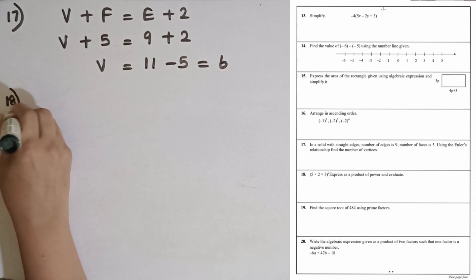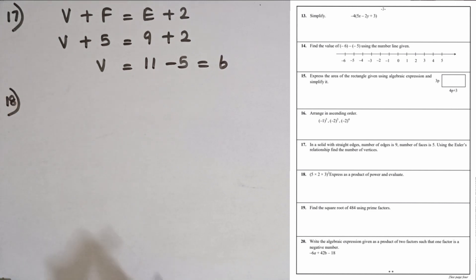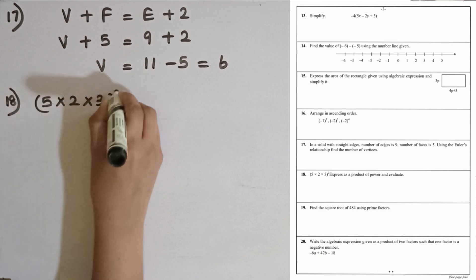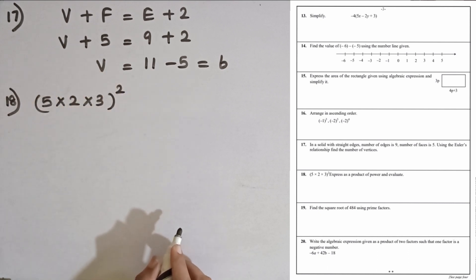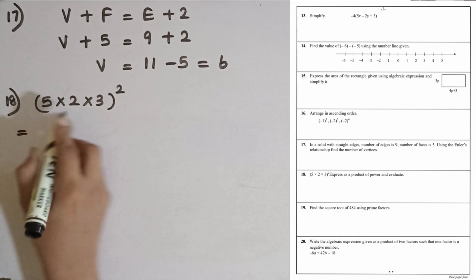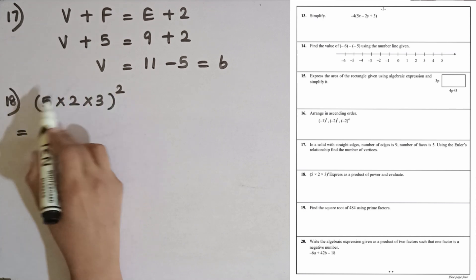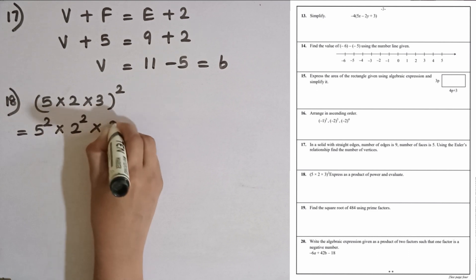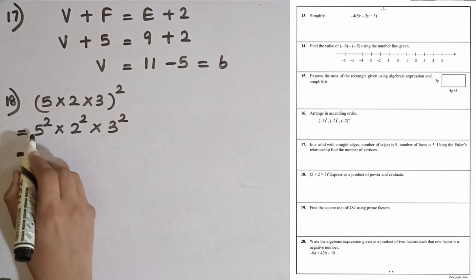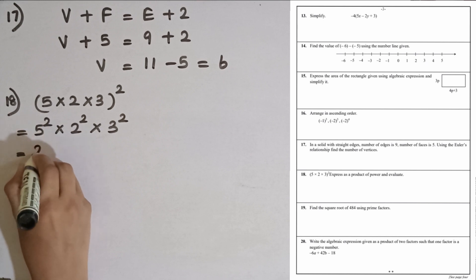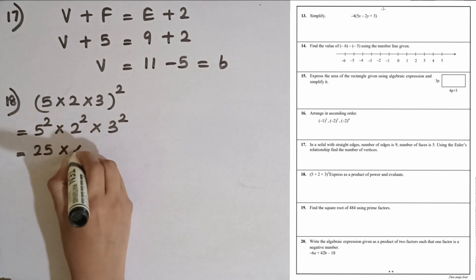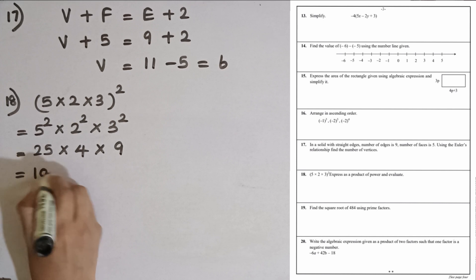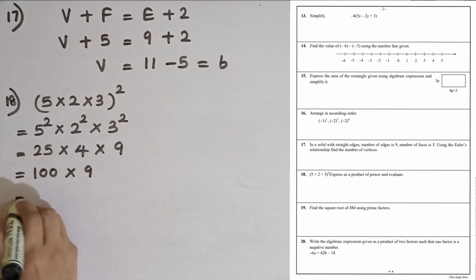Question number 18. Express (5 × 2 × 3)² as a product of powers and evaluate. We apply the power to each number: 5² × 2² × 3². 5 squared is 25, 2 squared is 4, 3 squared is 9. 25 multiplied by 4 is 100, and 100 multiplied by 9 is 900.